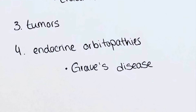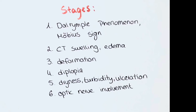Not every patient's eyes are affected in the same way, due to six different stages in which exophthalmos can present. The first stage is the least severe. It presents with the Dalrymple phenomenon, which is the upward pushing of the superior eyelid giving a larger surface of the bulbus, and the Möbius sign, which describes the difficulty in convergence of the eye.